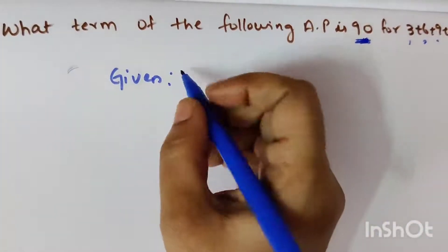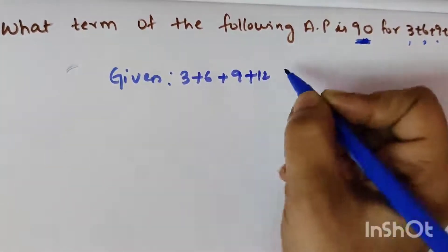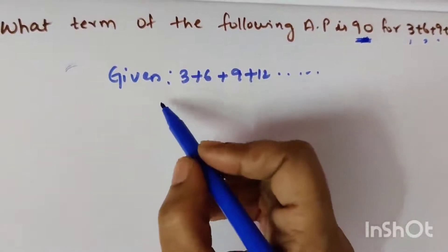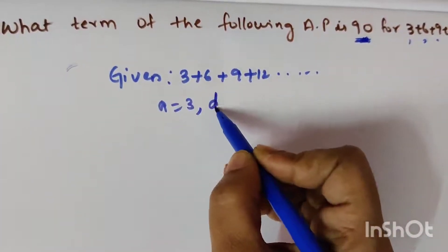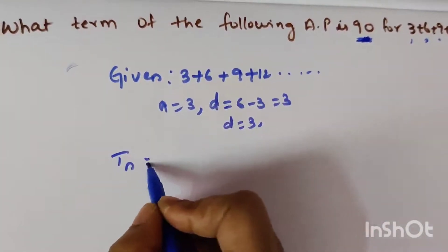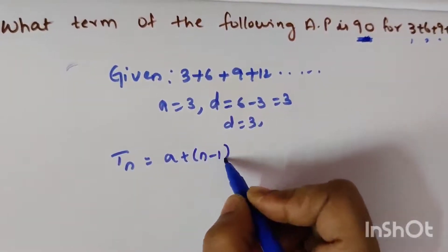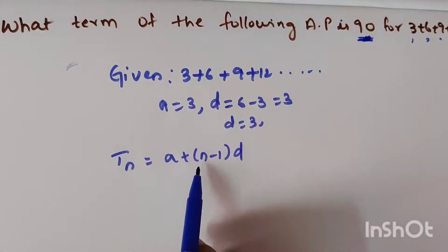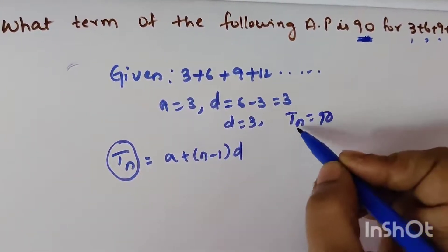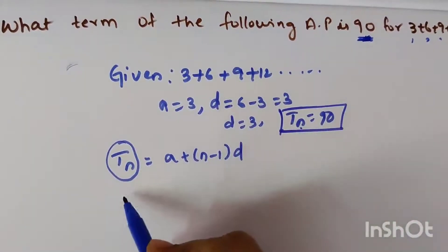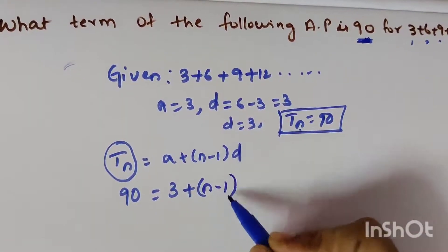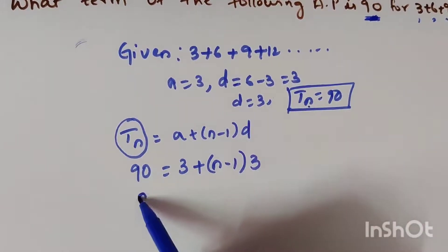Given series: 3 + 6 + 9 + 12, and so on. We need to find at what term the value is 90. The first term a = 3. Common difference d = 6 − 3 = 3. We know T(n) = a + (n−1) × d, and T(n) = 90. So we substitute: 90 = 3 + (n−1) × 3.